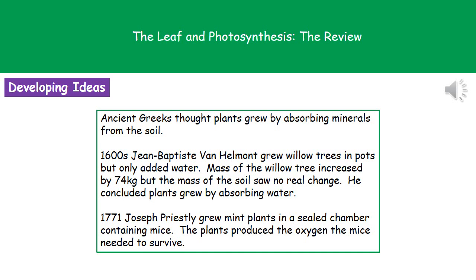Jumping forward to 1771 and Joseph Priestley — he carried out an experiment with mint plants and mice. He had a completely sealed chamber with mice in it and, no surprise, the mice died because they ran out of oxygen. He then found that if you put mint plants into the sealed chamber along with mice, the mice survived longer because the plants produced oxygen for them. His idea was that plants produced oxygen, evidenced by the mice surviving longer when plants were present.